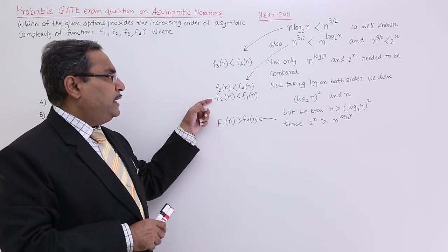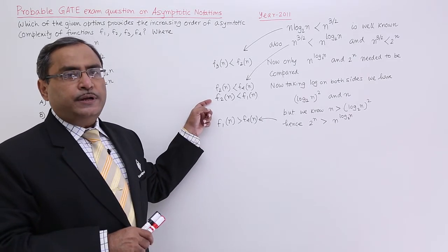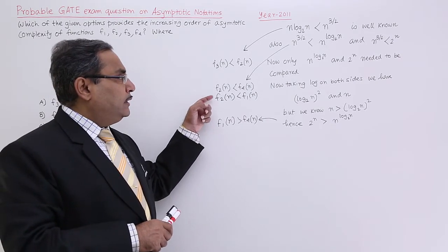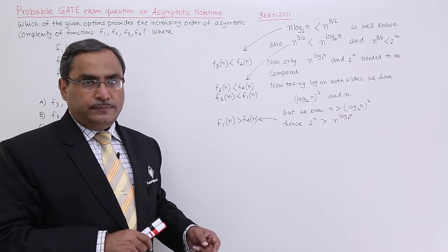Now, the question is coming whether f1 and f4, which one is greater or which one is lesser? If you can get that one, then obviously we can get the sequence.